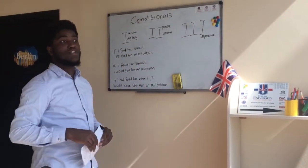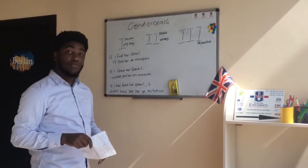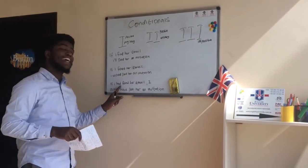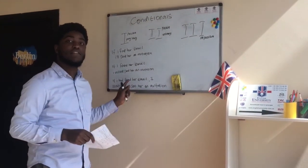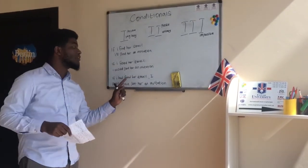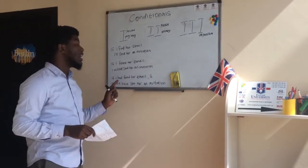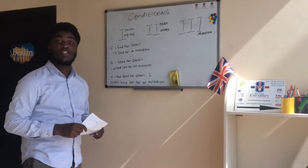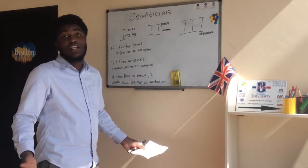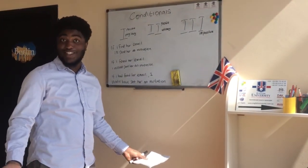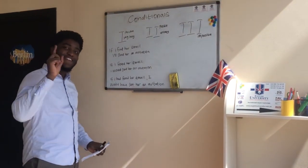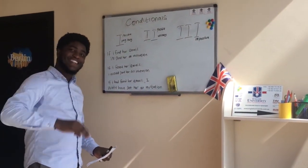The third group is impossible — that's when you bring in the past perfect. If I had found her email, I would have sent her an invitation. This means you didn't find the email and you didn't send any invitation. I hope that helps you understand the first, second, and third conditionals. Bye!